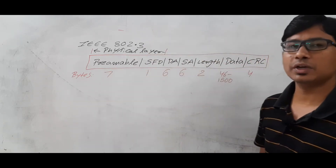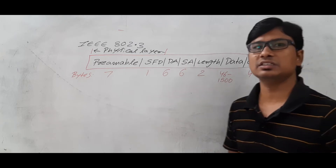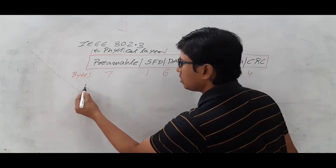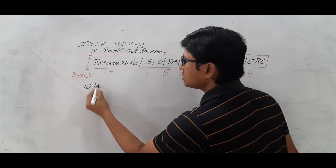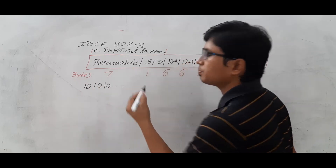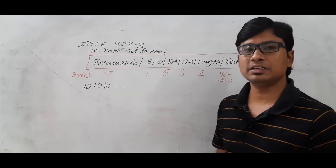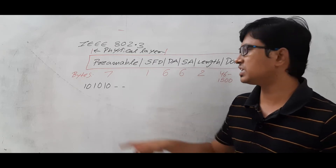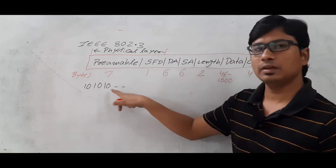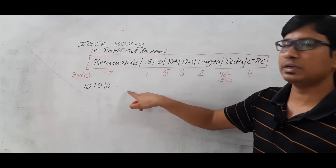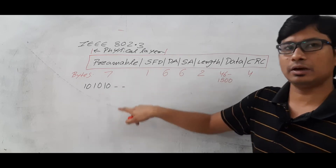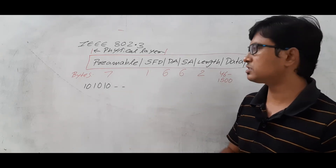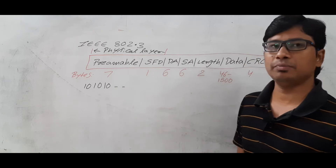You can ask, the preamble is a seven-byte information — what does it actually consist of? It consists of the pattern 1010 repeating up to seven bytes. Seven bytes is 7 times 8, which is 56 bits. So the pattern 1010 repeated 28 times gives you totally 56 bits of preamble.